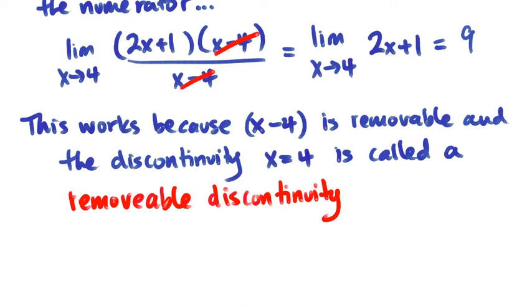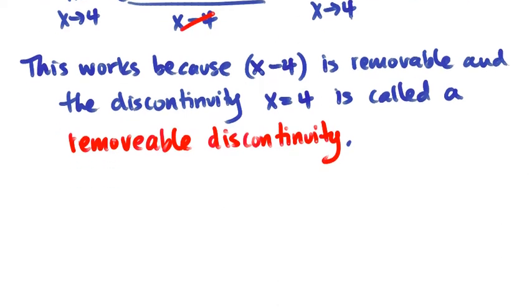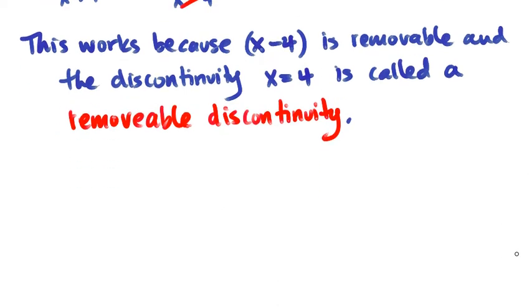So if we've got certain kinds of removable discontinuity going on, we can make the limit function actually work by doing factorization.